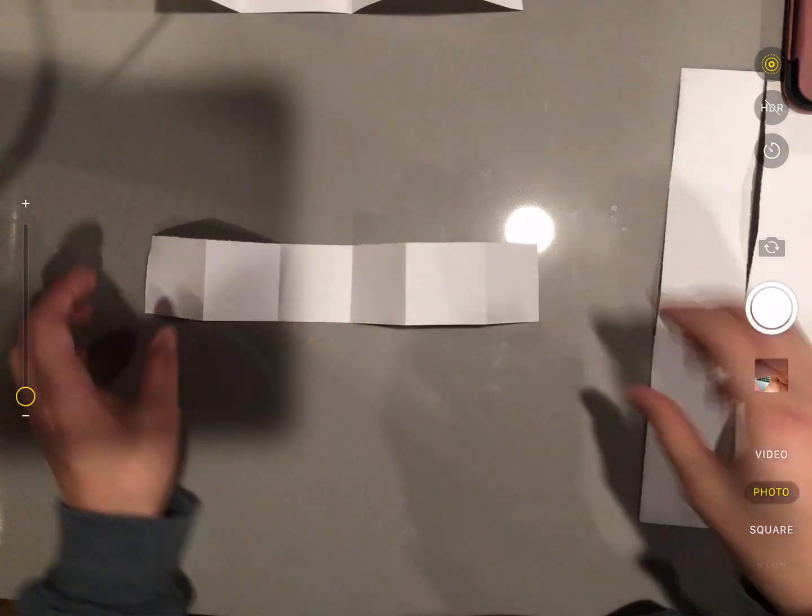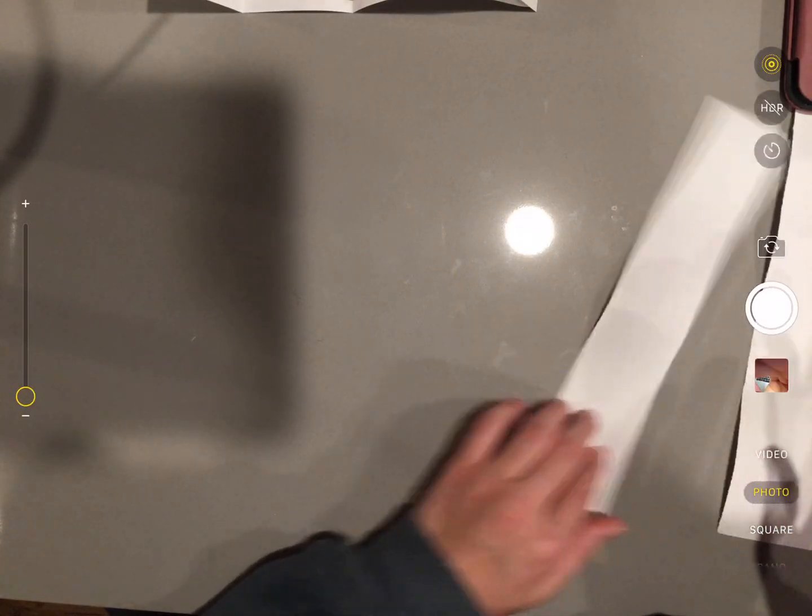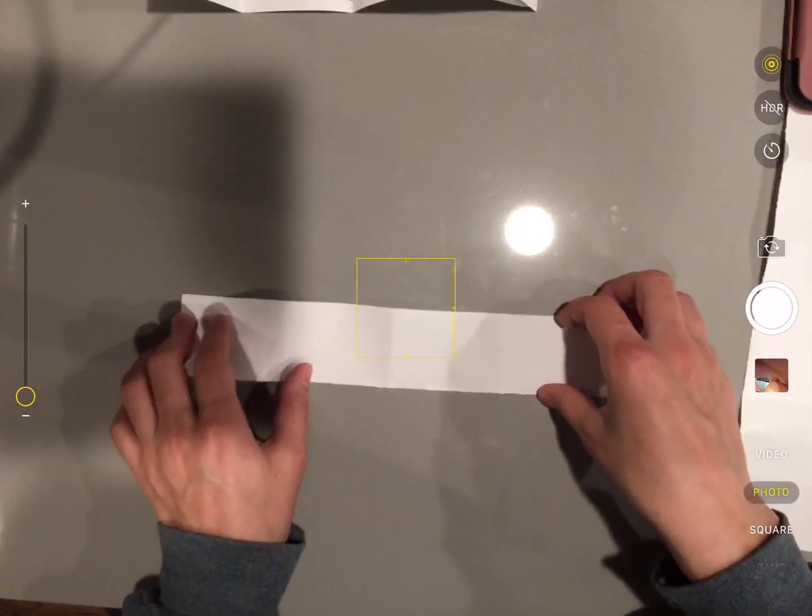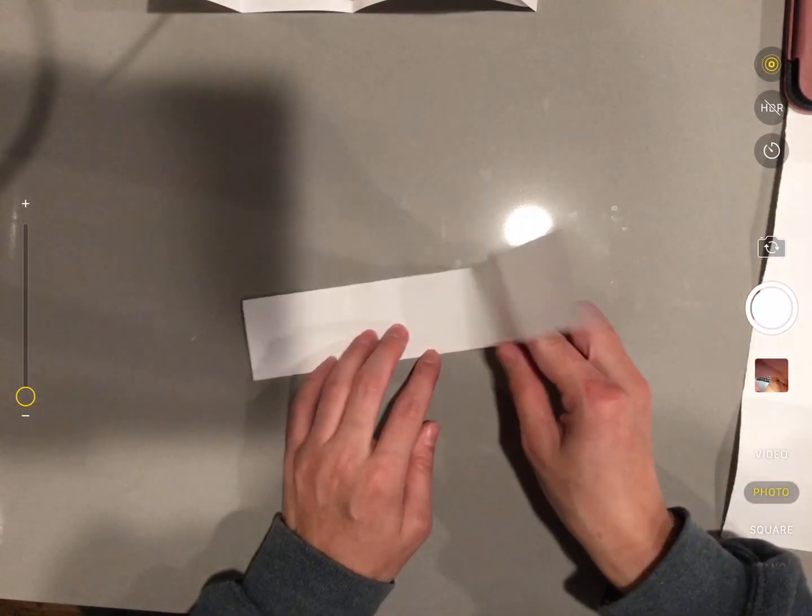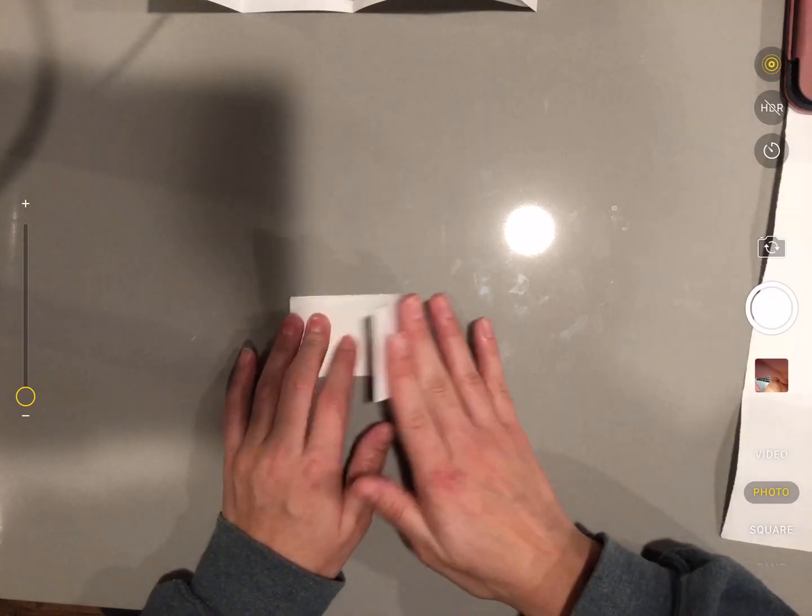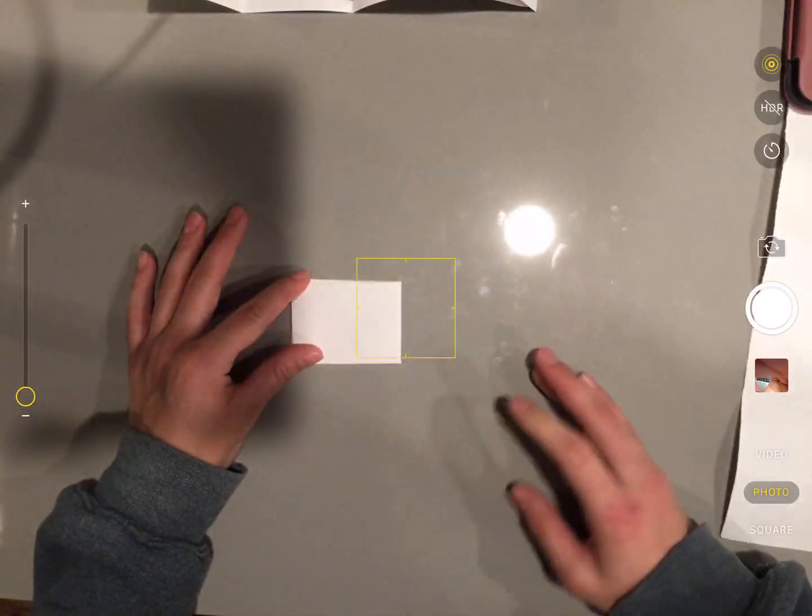Good job. All right. Now I'm going to fold a piece of paper into eight parts. So remember, we got four parts by folding it in half and then folding it in half again. So how do you think I can get eight equal parts?